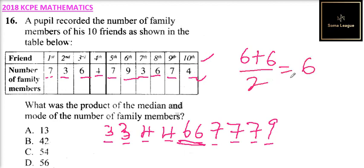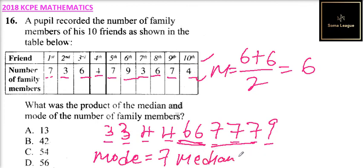So the question, what is the product of the median and the mode. The median is equal to 6. The mode is that value which has the highest number of data and that is 7. So mode is equal to 7. Implying that 7 multiplied by 6 is equal to 42.